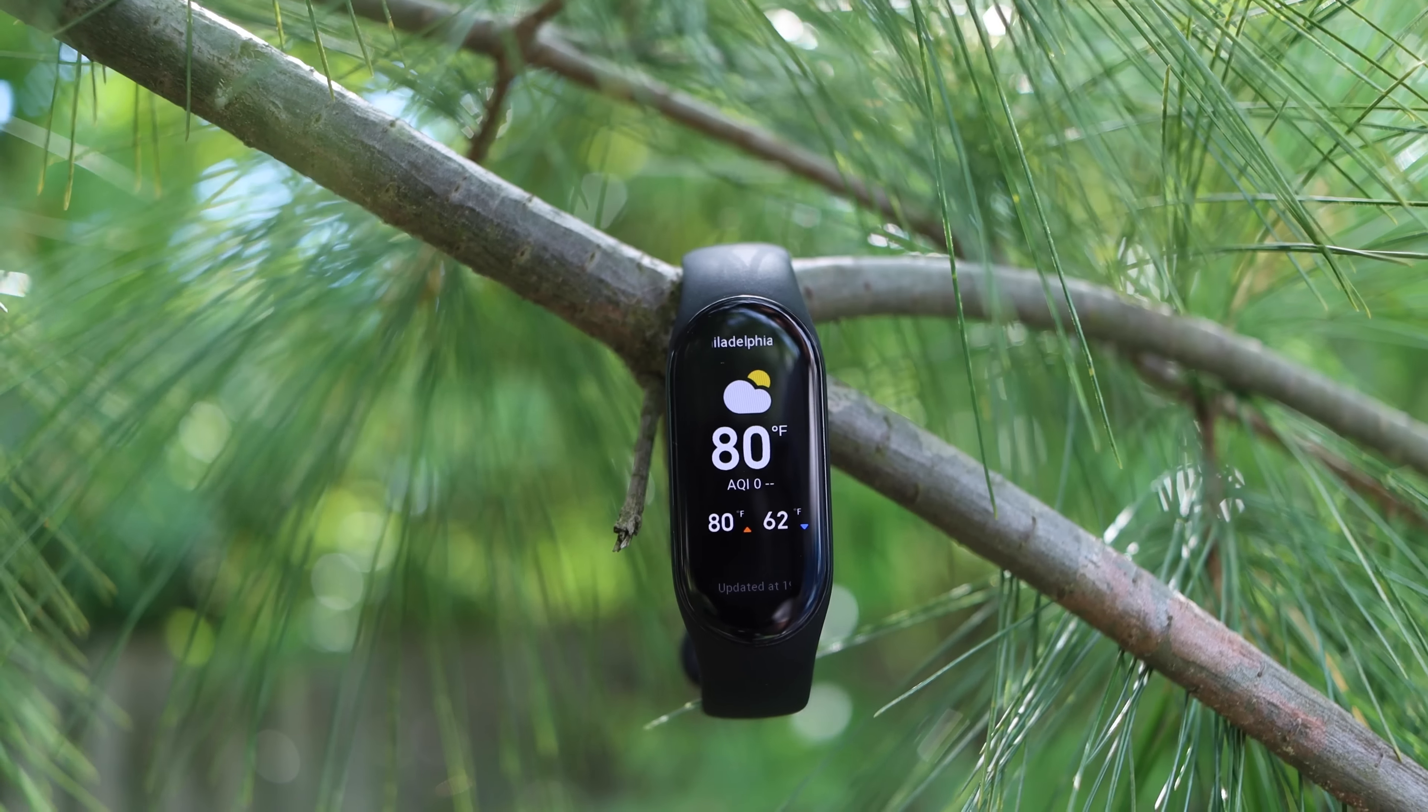When it comes to workouts, the Mi Band 7 really has a big improvement with 110 activities versus 30. But personally, I don't really get that excited about that. 110 workouts, I don't think I've done 110 different workouts in my life. I think 30 is probably just fine. Most of the time, I'm just using this for running, maybe lifting weights. But if you're doing something a little bit more esoteric, maybe the 110 is really going to give you what you need.